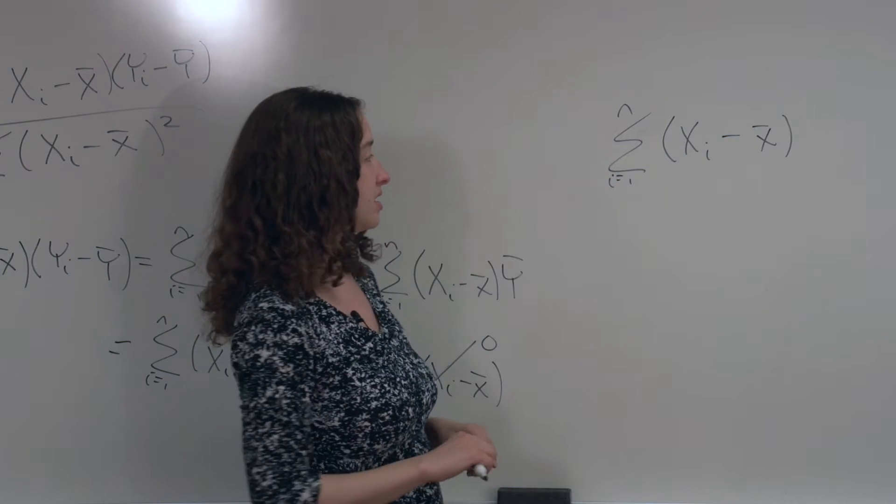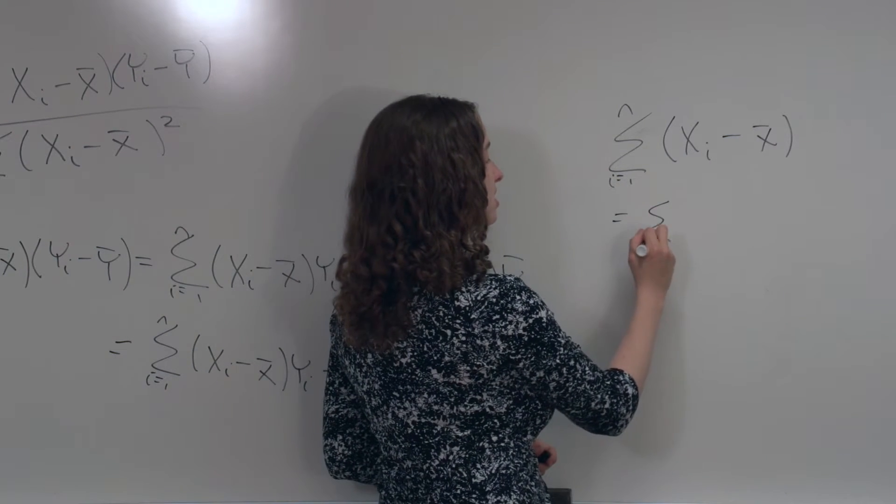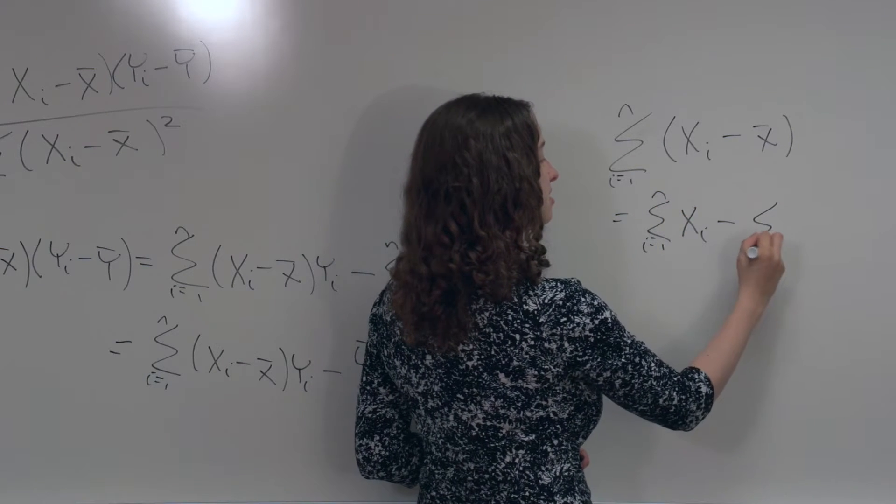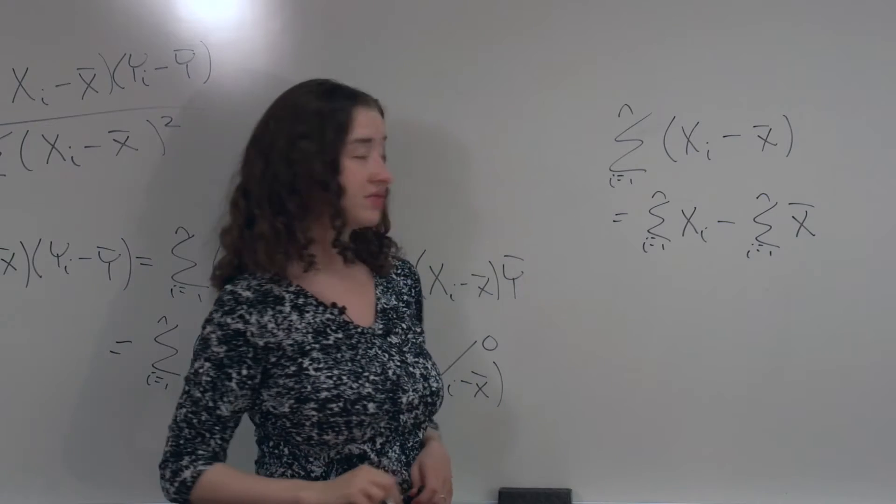I want to show you that this quantity is equal to 0. This quantity is equal to the sum of all the x values minus x bar added up the same number of times.